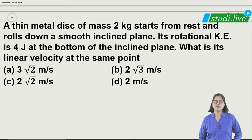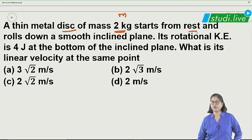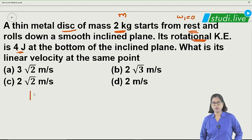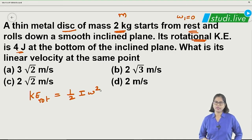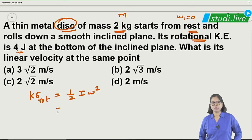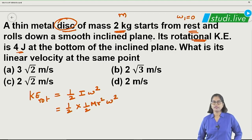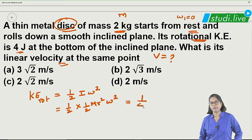The next question involves a thin metal disc of mass 2 kg that starts from rest — meaning initial angular velocity is zero — and rolls down a smooth inclined plane. Rotational kinetic energy is given as 4 joules. For a disc, moment of inertia I equals half mr squared. We need to find the linear velocity.